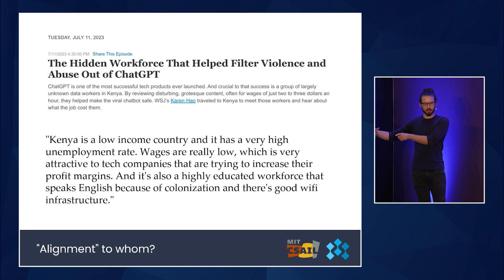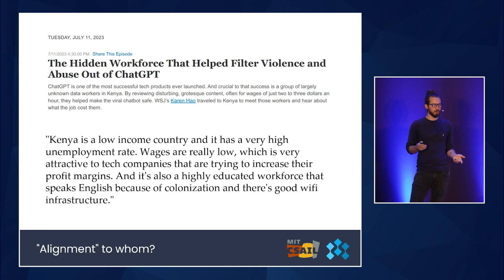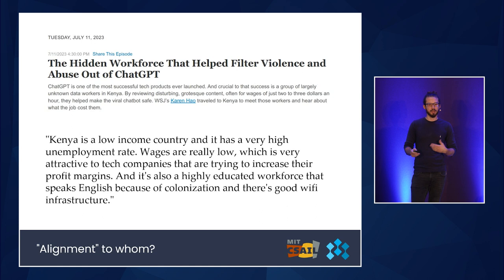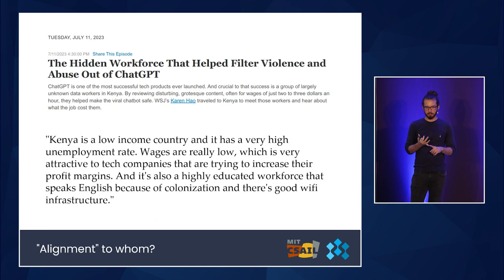So these Kenyan knowledge workers had to annotate data involving things about as bad as you might care to imagine, including a lot of graphic textual depictions of sexual violence. They did this day in and day out. And predictably, this had a distressing effect on a lot of these workers. The transcript goes on to include quotes from these knowledge workers about how it affected their ability to sleep, their happiness, their feelings of fear with interacting with people around them, and their ability to have happy interactions with their family. Some of them were emphatic about how they really regret being part of this cohort because it just wasn't worth it to them.